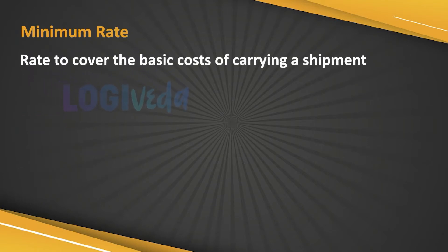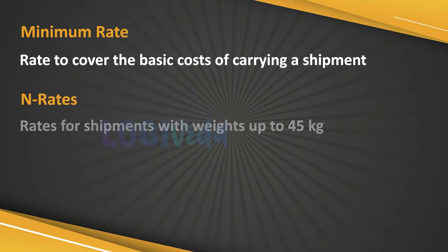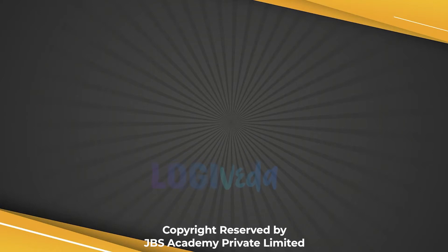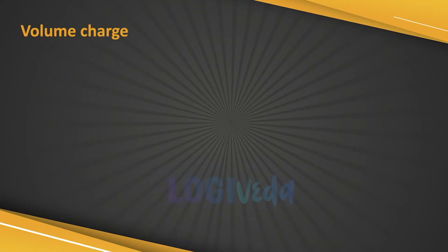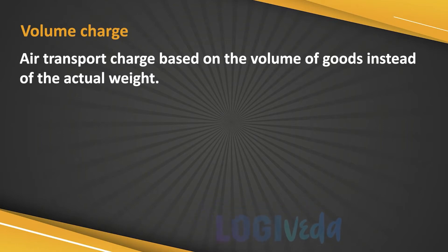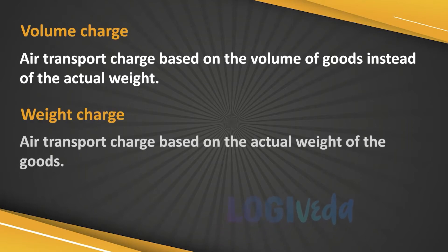Minimum rate: the rate to cover the basic cost of carrying a shipment by the airline. This rate is basically the normal rate applied when weighing a shipment less than 45 kg. Volume charge: the air transport charge based on the volume of goods instead of actual weight. Weight charge: the air transport charge based on the actual weight of the goods.